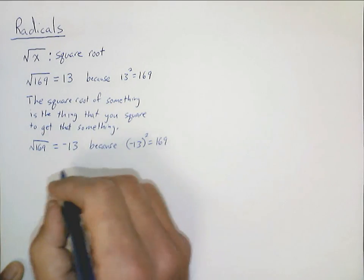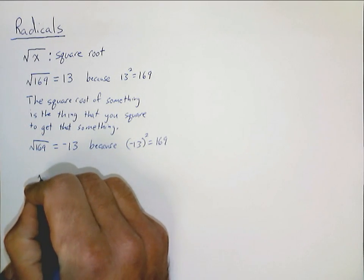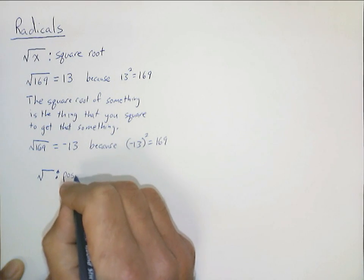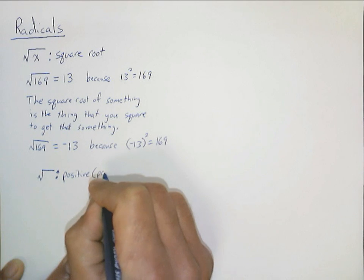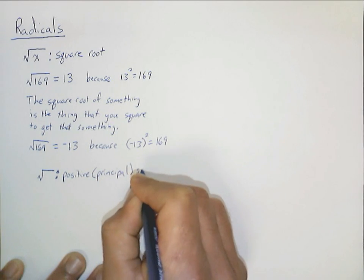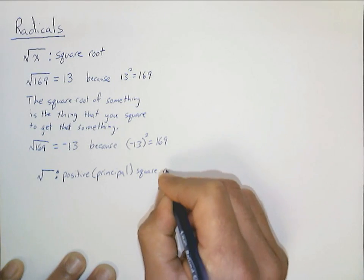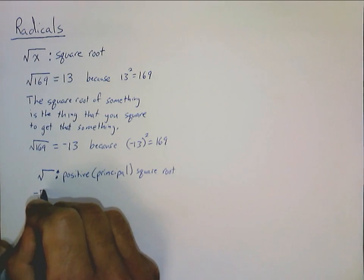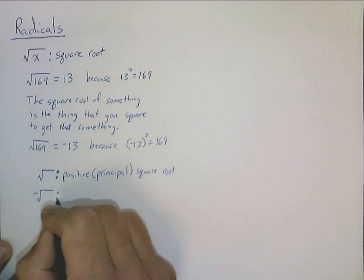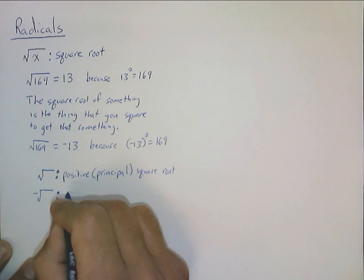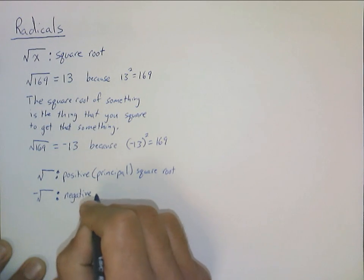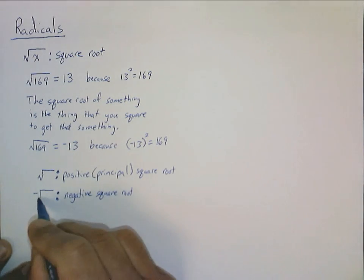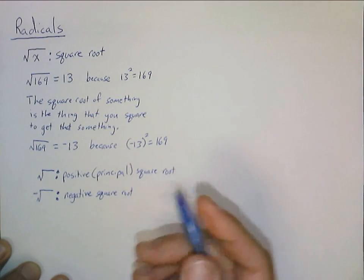We need some notation to specify which square root we want. This radical symbol itself refers to the positive — or sometimes called the principal — square root. If we want the negative one, we put a negative sign in front of the radical. So if you see a negative sign in front of it, we're talking about the negative square root. This symbol is just the positive one; slap a negative sign on it, you get the negative one.